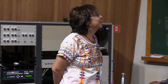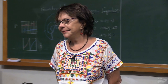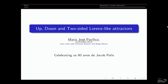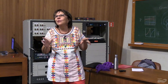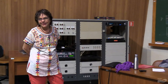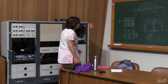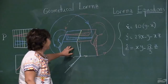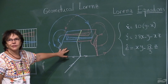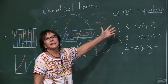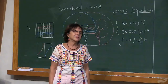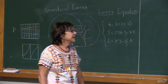Thank you. Thanks to Lorenzo for the invitation. I'll talk about this subject, and as Lorenzo always says, all my talks are the same — in the sense that I always have the same pictures. We start with the Lorenz attractor. Let's recall what is known about the geometric Lorenz attractor. It's a model introduced in the 70s to model the Lorenz equations that were known to mathematicians in the 60s.